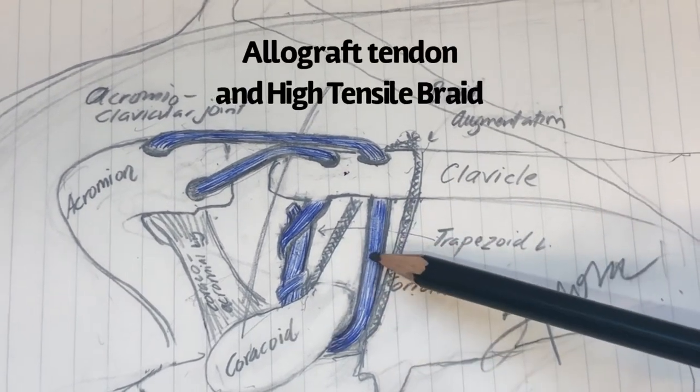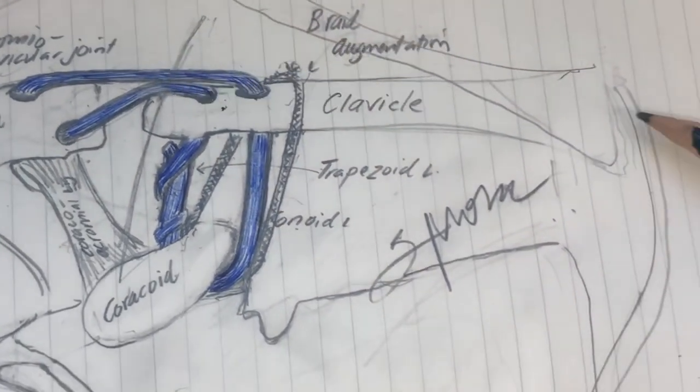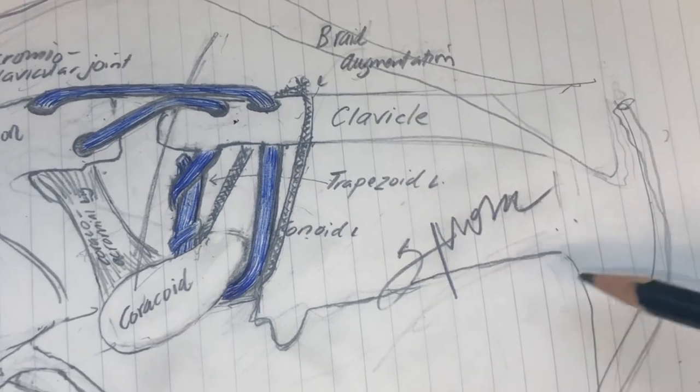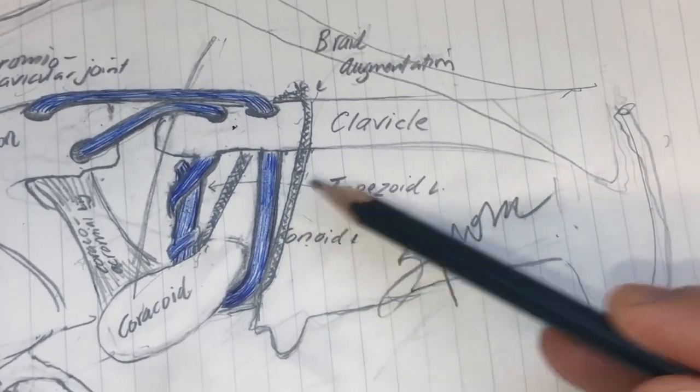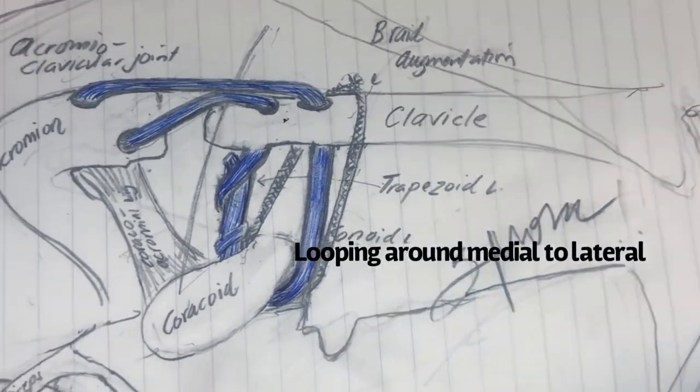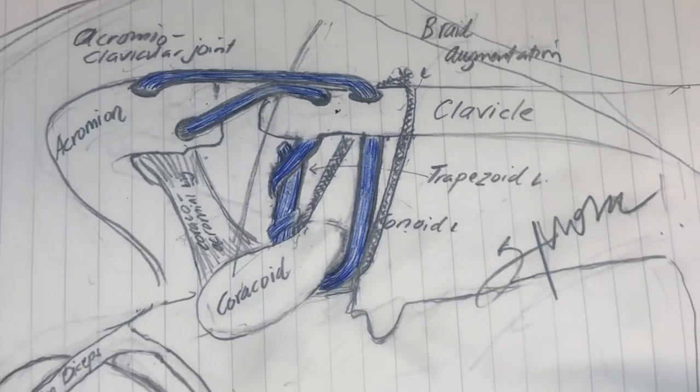I take a graft, usually a semitendinosus, which I've colored blue. Semi-tendinosus graft. This would be like the graft. It's usually just a strip like this. And then I take my braid, put them together, and I pass them under the coracoid. So I get them under the coracoid. A lot easier said than done. It's actually quite difficult to do so, especially in very muscular people.